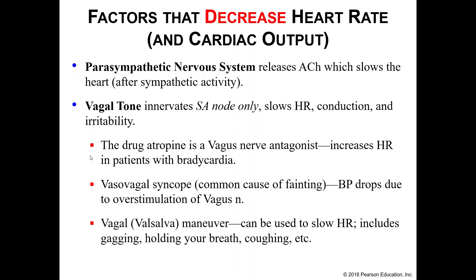We could also decrease your heart rate and therefore your cardiac output. While sympathetic stimulation increases heart rate, parasympathetic stimulation will decrease it — we use the vagus nerve to release acetylcholine, which slows down the heart rate and decreases cardiac output. The vagus nerve only innervates your SA node, reducing the frequency of firing and slowing conduction, essentially undoing the fight-or-flight response to return to a rest-and-digest state.